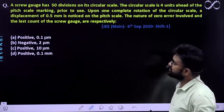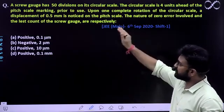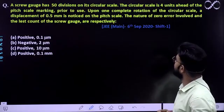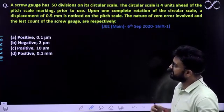A question says, a screw gauge has 50 divisions on its circular scale. Circular scale ki division already there ki hai bhai ya, you have 50 divisions ki. The circular scale is 4 units ahead of its pitch scale marking.